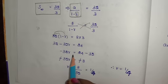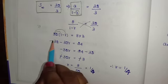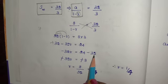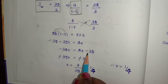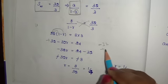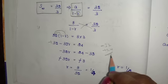So -32r = 24 - 32, which equals -8. Therefore -32r = -8.